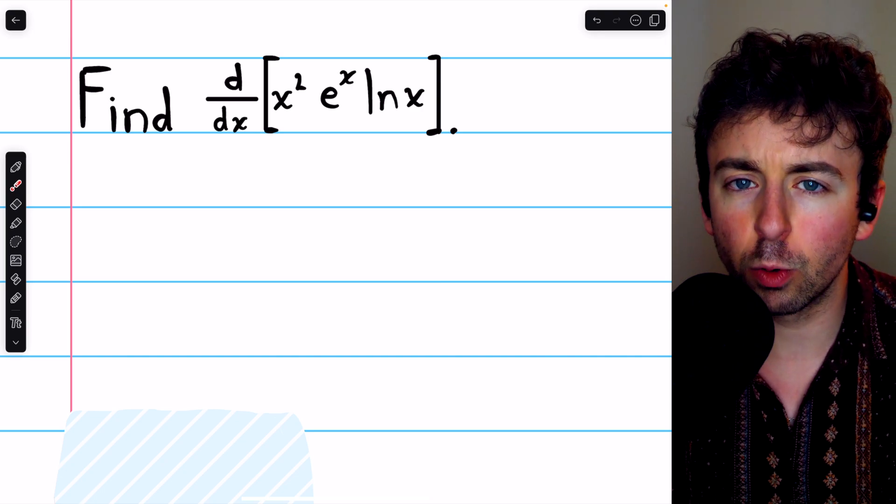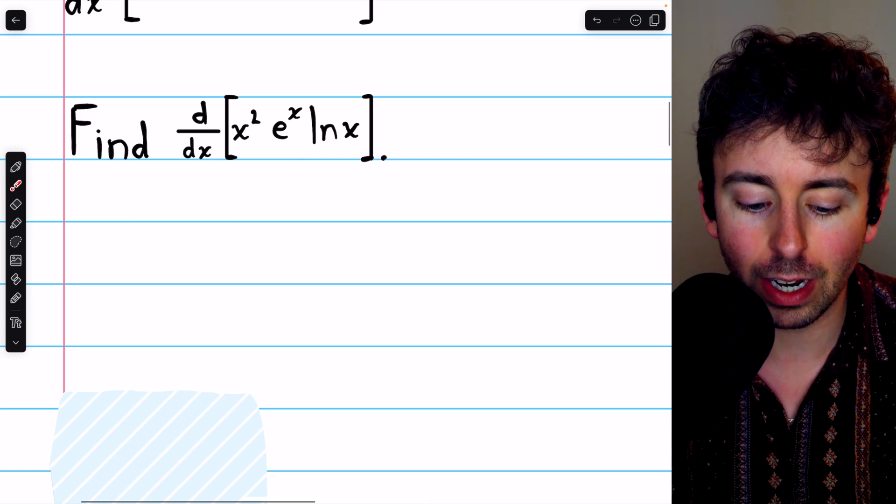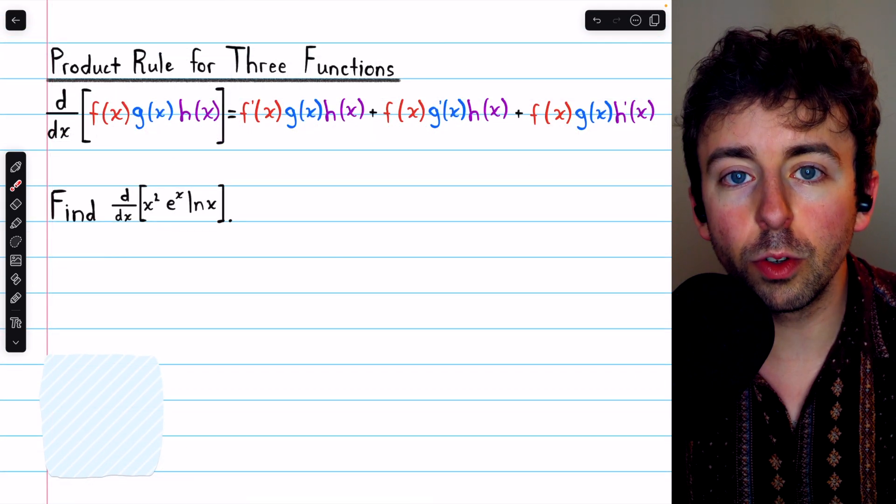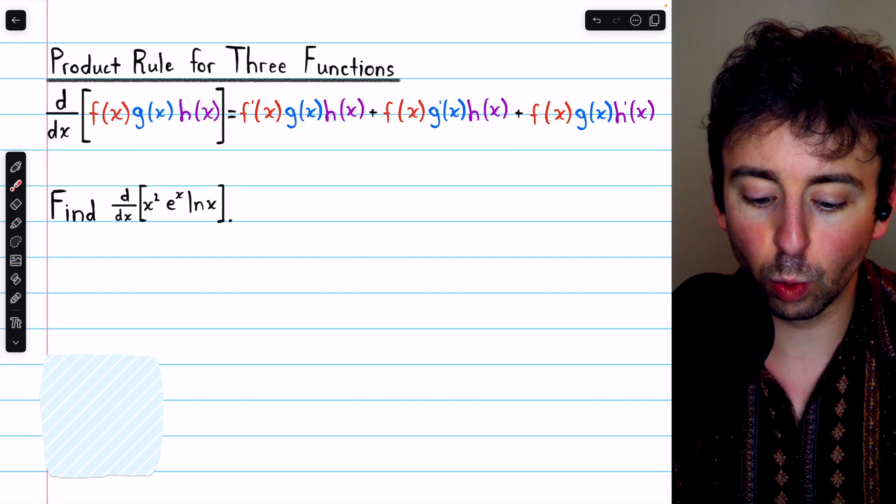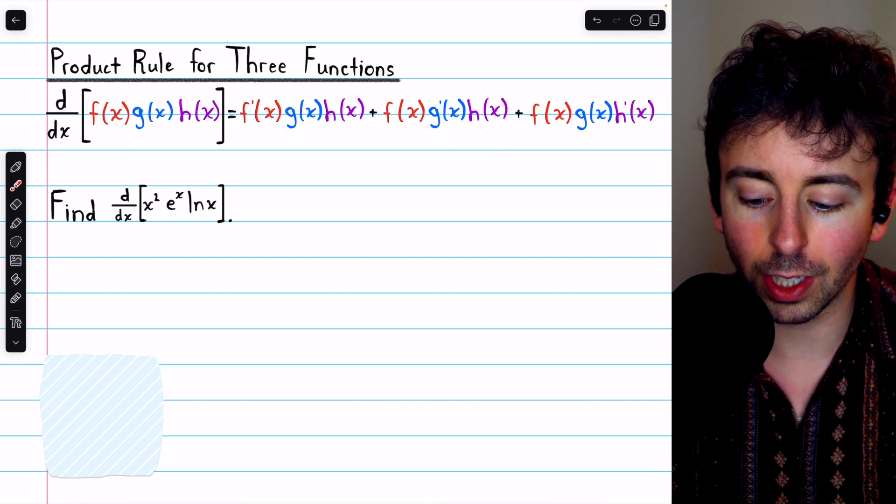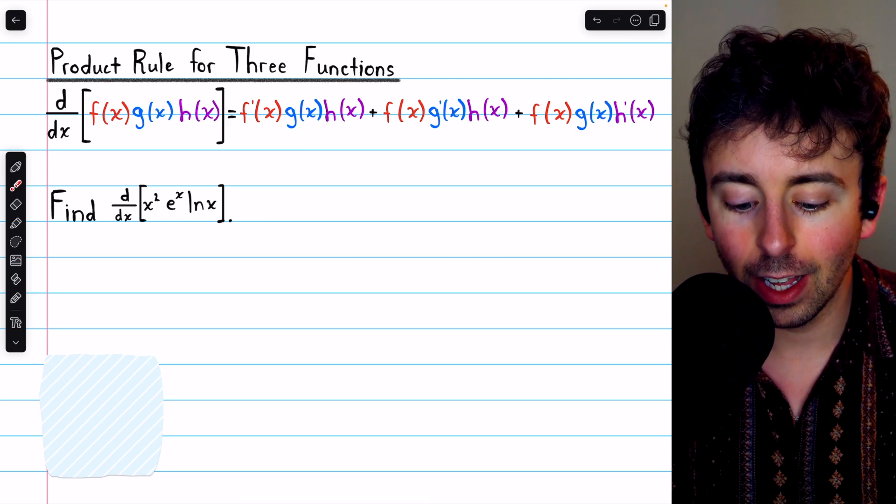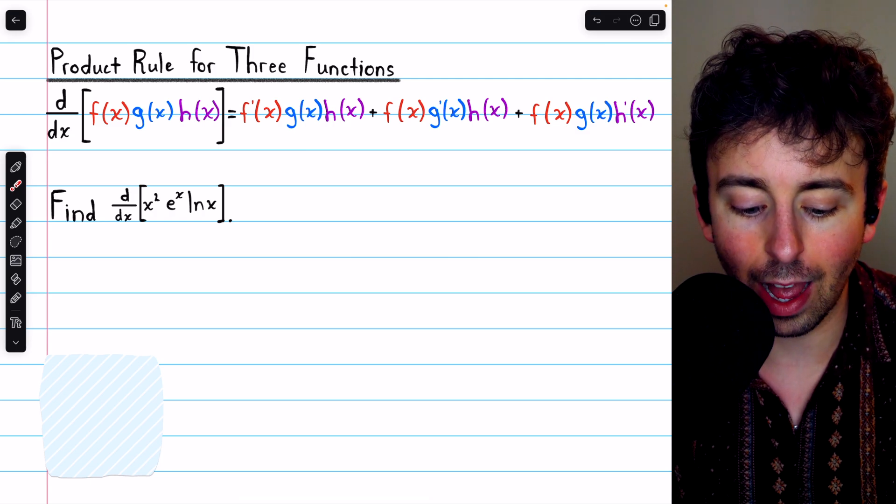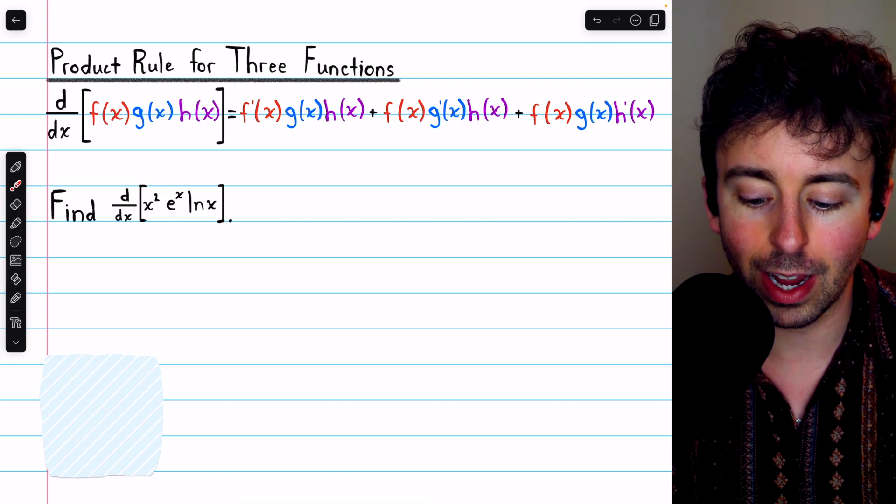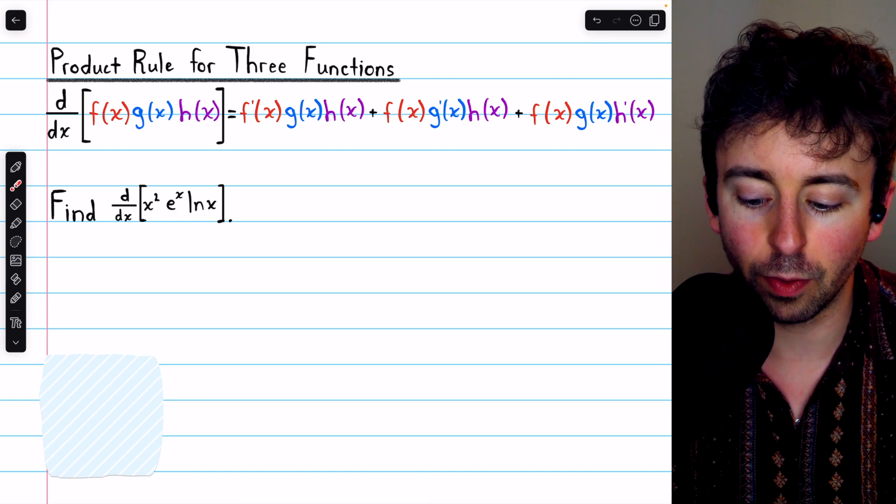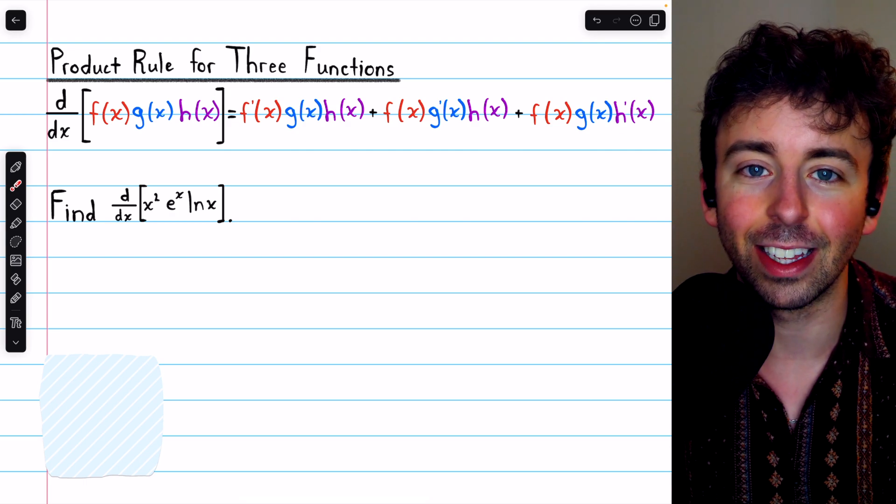Thankfully, the product rule generalizes very naturally to three functions, and I've written it here for your reference. The product rule for two functions is f'g plus g'f. The product rule for three functions works similarly, except we need one extra term to get that h' in there. So if the three functions are f, g, and h, it's f'gh plus fg'h plus that third term fgh'. So each function gets a turn at having its derivative.